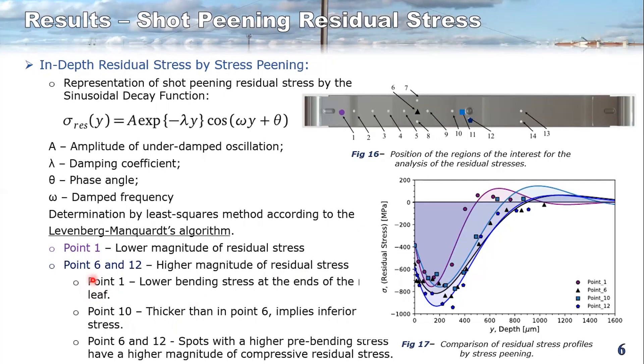And this is proven analyzing points six and twelve. In these points, we have higher pre-bending stress applied. In point ten, this point is here, but in point ten, because the geometry in this point, at this point, the geometry is thicker, we have a lesser magnitude of stresses.